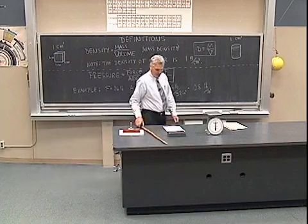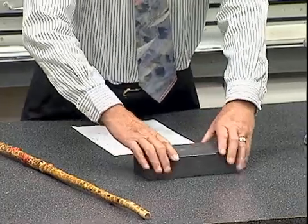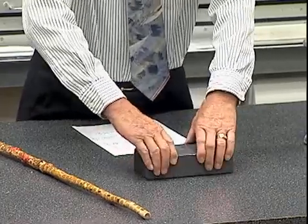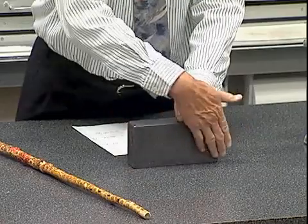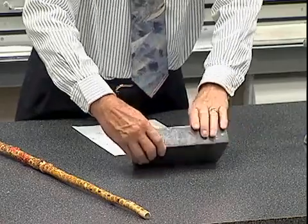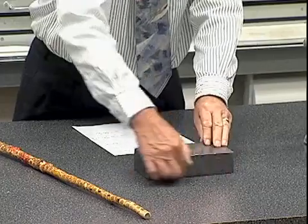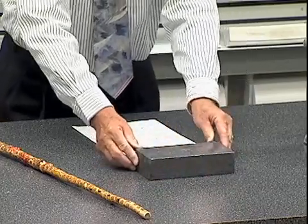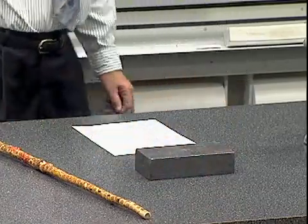Here I have a block of lead, and it's resting on the table. There's a certain cross-sectional area here, the surface which will become the bottom of the block when it rests on the table. This is 8 inches by 4 inches, or a cross-sectional area of 32 square inches.